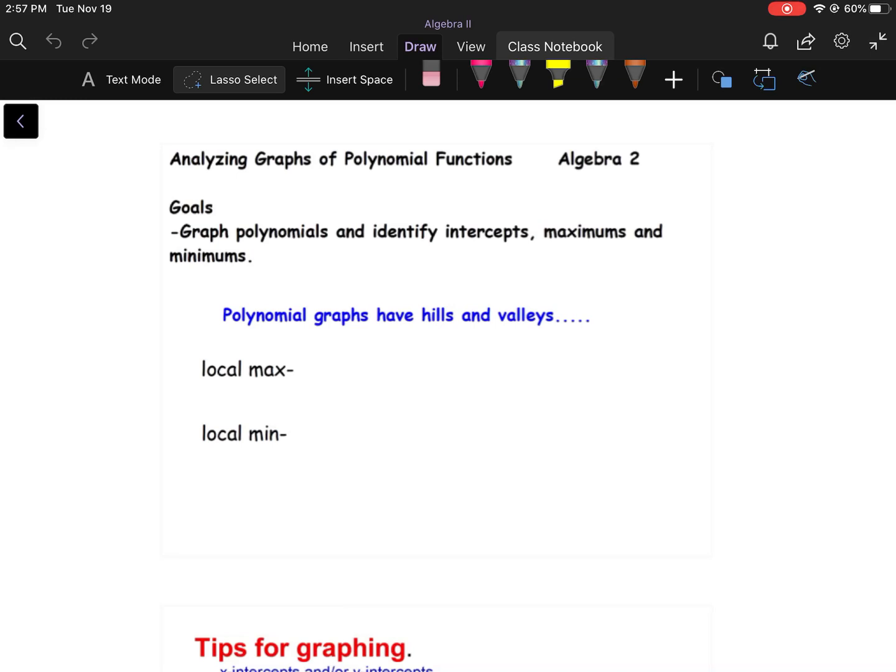Now we've talked about a max or min on parabolas. For example, if I've got a parabola that opens up, I've got a minimum on the bottom. If I've got a parabola that opens down, I've got a maximum on top. It's the same idea, but sometimes we can have on different polynomials different hills and valleys. Every time you get a hill you have what's called a local max, so it's a max in a certain part of the graph.